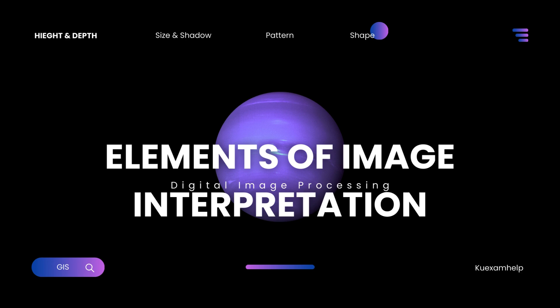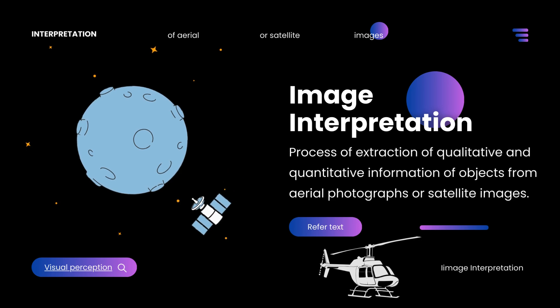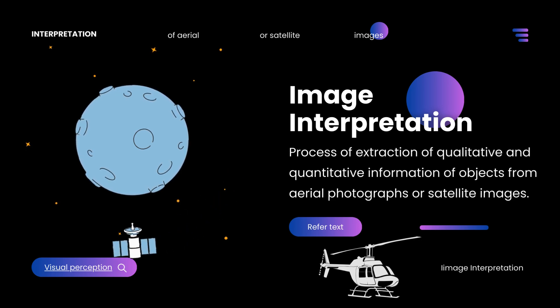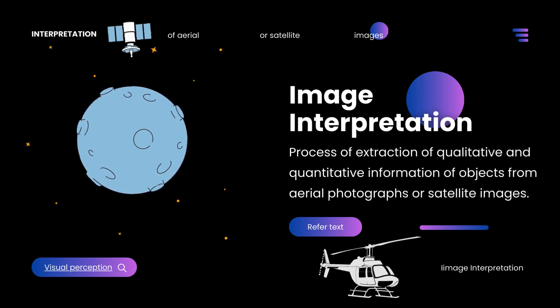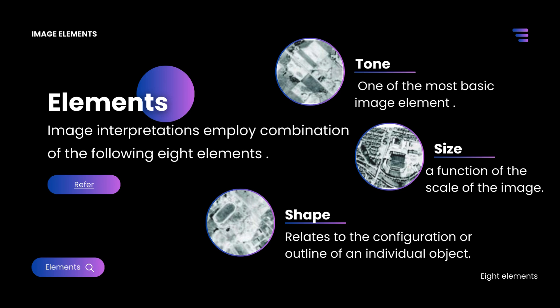Welcome to our video on digital image processing. In this video, we'll be exploring the fundamentals of image interpretation, breaking down the essential elements that help us understand and analyze visual data. Image interpretation is the process of extraction of qualitative and quantitative information of objects from aerial photographs or satellite images. Image interpretation employs a combination of the following eight elements.